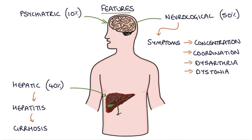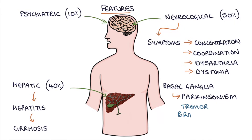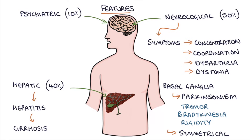Copper deposits in the basal ganglia in the brain leads to something called Parkinsonism, and this is where you get three things: tremor, bradykinesia or small movements, and rigidity. These Parkinsonism symptoms are symmetrical, which is what differentiates them from the asymmetrical symptoms that you find in Parkinson's disease.